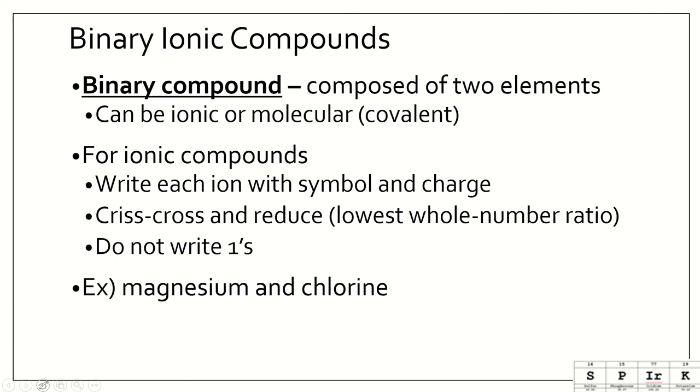So for example, magnesium and chlorine. We should know by now that magnesium is in group 2, and it's a metal, so we write the cation first. It's in group 2, so it's going to lose two valence electrons to be Mg2+. Chlorine is in group 7a, so it's going to gain one electron, so it's going to become Cl-.